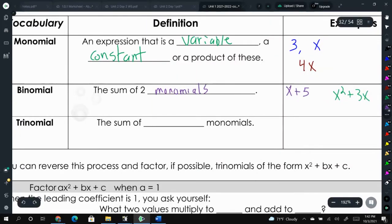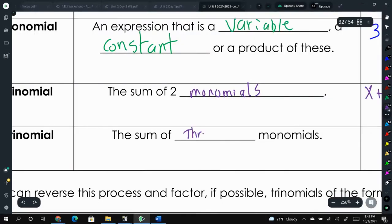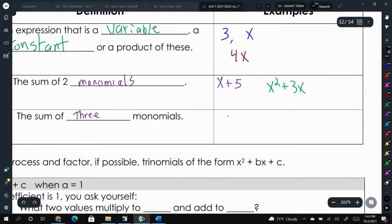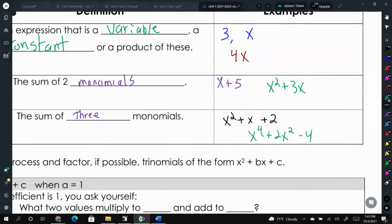And the trinomial is a sum of three monomials. So like our quadratic functions in standard form, those are trinomials. This function right here is a quadratic function that has three terms. So don't just think that quadratics are the only type of function that could be written as a trinomial. A trinomial just has three terms in it.